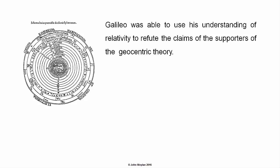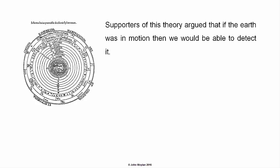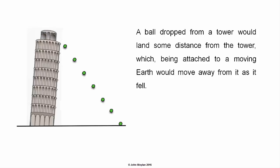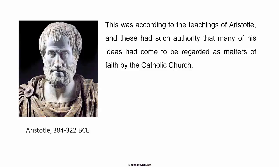Galileo was able to use his understanding of relativity to refute the claims of the supporters of the geocentric theory. Supporters of this theory argued that if the earth was in motion, then we would be able to detect it. A ball dropped from a tower would land some distance from the tower, which, being attached to a moving earth, would move away from the ball as it fell. This was according to the teachings of Aristotle, and these had such authority that many of his ideas had come to be regarded as matters of faith by the Catholic Church.